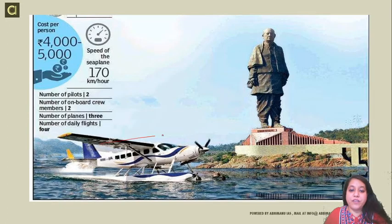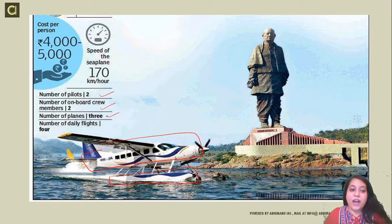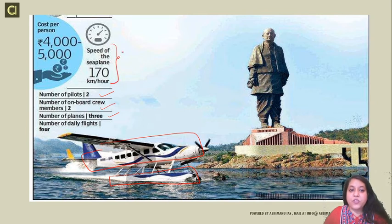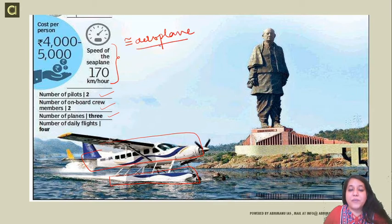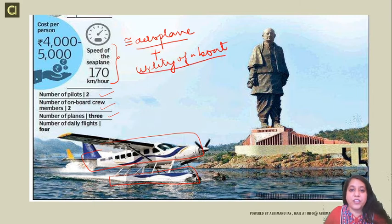This is a picture of a seaplane. You can see the attached float unit under the bottom of the seaplane. There are going to be two on-board crew members, three such planes, and four flights per day. The cost per person is going to be 4,000 to 5,000 rupees, and the speed of the seaplane is going to be 170 km per hour, equivalent to the speed of any airplane. It offers the speed of an aeroplane plus the utility of a boat — that is the dual advantage of this seaplane.